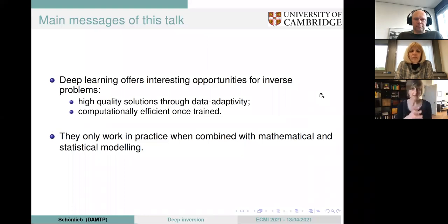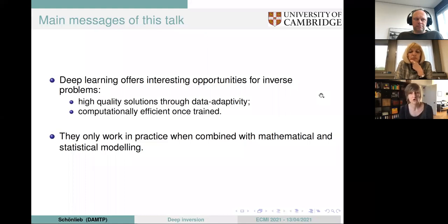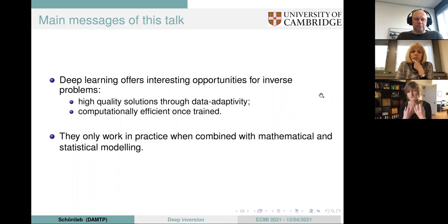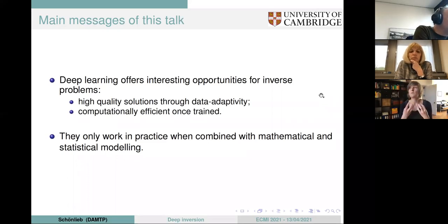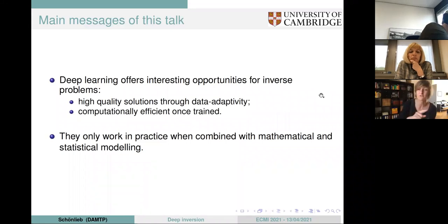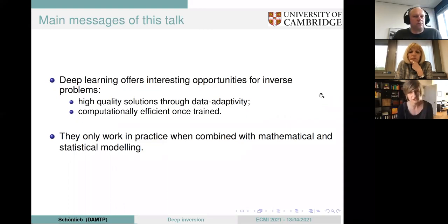So what is this talk about? The main messages of today's talk are, first of all, that deep learning really offers very interesting opportunities for inverse problems in two ways. On the one hand, neural networks have proven to be really good at modeling prior information by capturing information from data, by being very adaptive to data. This data adaptivity allows us to compute very high quality solutions, and I'll show you some examples for that.